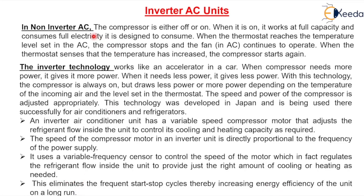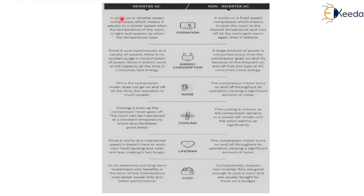Comparing non-inverter and inverter AC: inverter AC works on variable speed while non-inverter works on constant/fixed speed. Energy consumption in inverter AC is less and efficiency is more, whereas non-inverter AC consumes more energy. The inverter AC works silently, but non-inverter AC causes a significant amount of noise when operating.